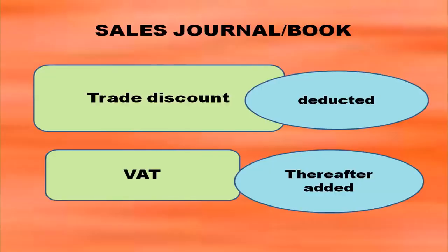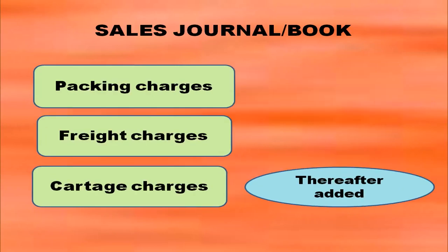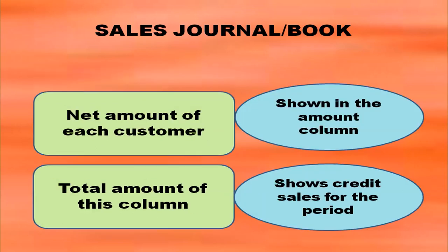If there is trade discount, you have to deduct it after doing calculations in the details column. If VAT (value added tax) is given, you have to add it. After that, if packing charges, freight charges, or cartage charges are given, they should also be added. The net amount of each customer is shown in the amount column.